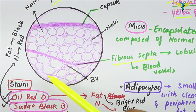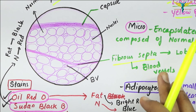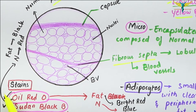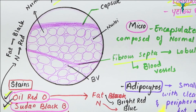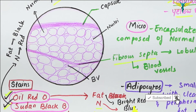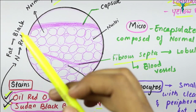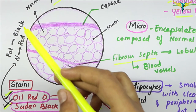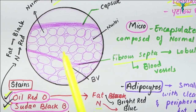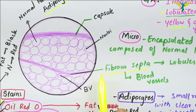The adipocytes are small round cells with clear cytoplasm and the nucleus pushed towards the periphery. The stains used for lipoma are Oil Red O and Sudan Black B. Oil Red O stains the fat bright red and the nucleus blue, whereas Sudan Black B stains the fat black and the nucleus red.